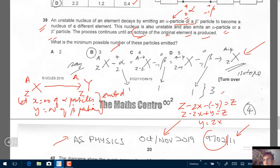So, we are looking at minimum possible. Y equals to 2X. So, if X equals to 1, Y equals to 2. So, 1 plus 2 is 3. Correct answer, B.